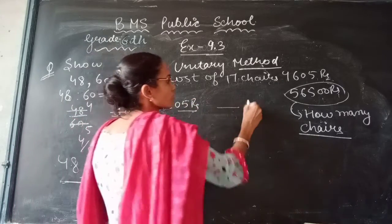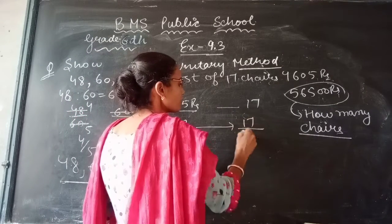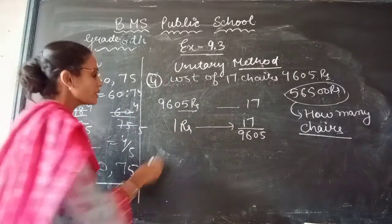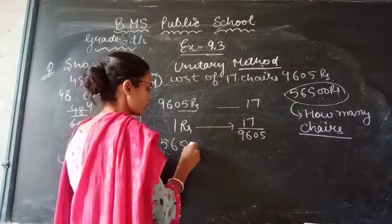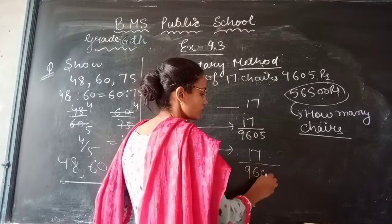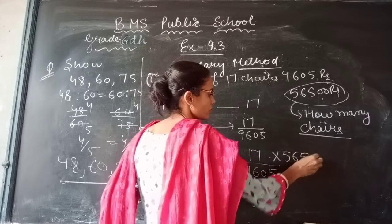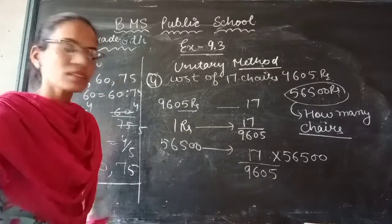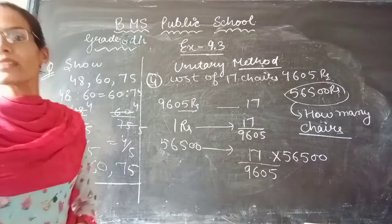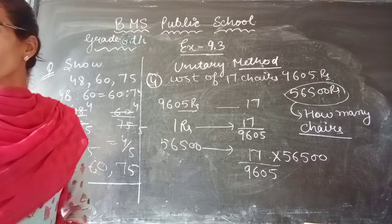The cost of 17 chairs is ₹9,605. So the number of chairs per rupee is 17 by 9,605. For ₹56,500, multiply 17 by 9,605 and then by 56,500. Divide and simplify the numbers properly to get your answer of 100 chairs.